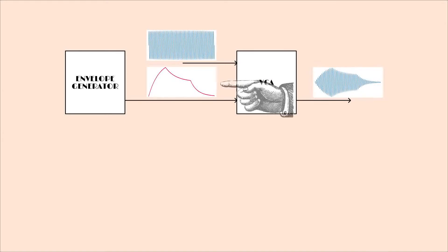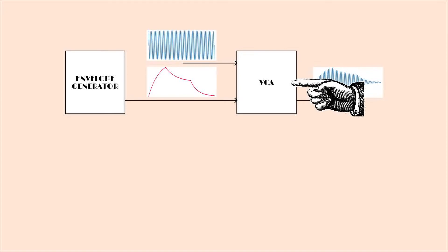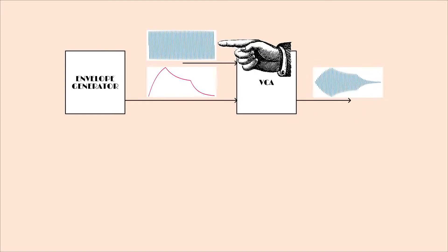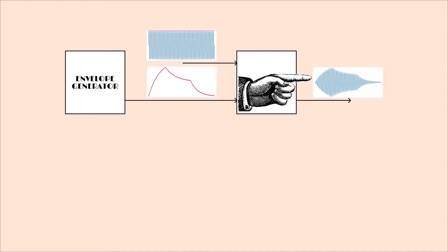Today we're going to take a look at this module here. This is an envelope follower. What is an envelope follower? You're probably familiar with the idea of an envelope generator module — a module that produces a control voltage output that starts from zero, goes up to some maximum, and then makes its way back down to zero again. A very typical use for such a signal is to put it into the control voltage input on a voltage controlled amplifier, with an audio signal on the input — maybe straight out of an oscillator — that has a constant amplitude, a constant loudness. Coming out of the VCA you end up with an audio signal whose loudness varies, following the shape of that envelope control voltage.